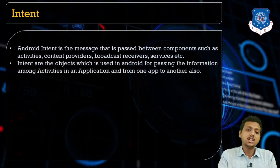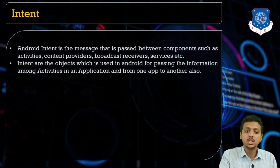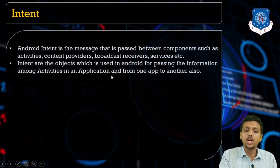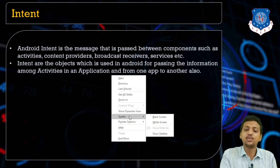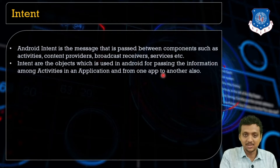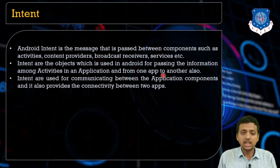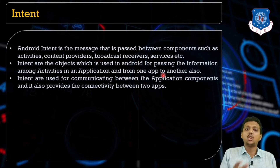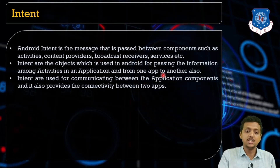Intent objects are used in Android for passing information among activities — from one app to another app, or within the same app. Intents are also used for communicating between application components.